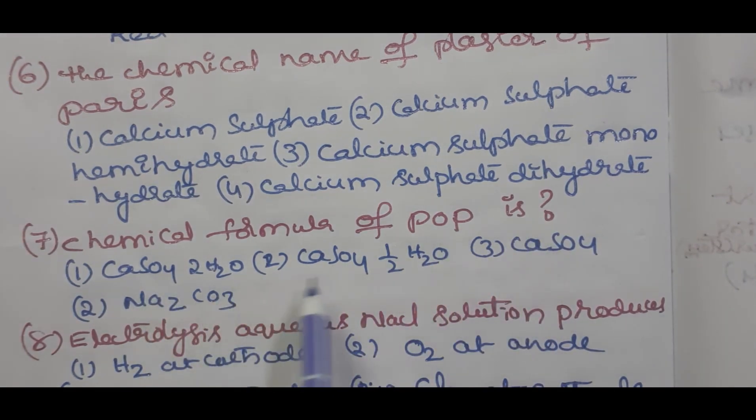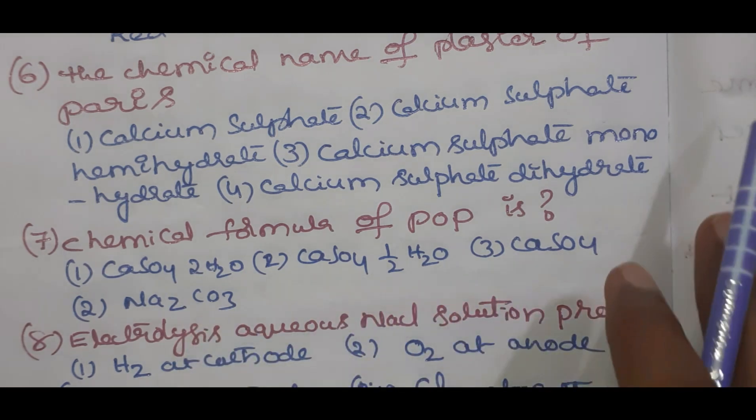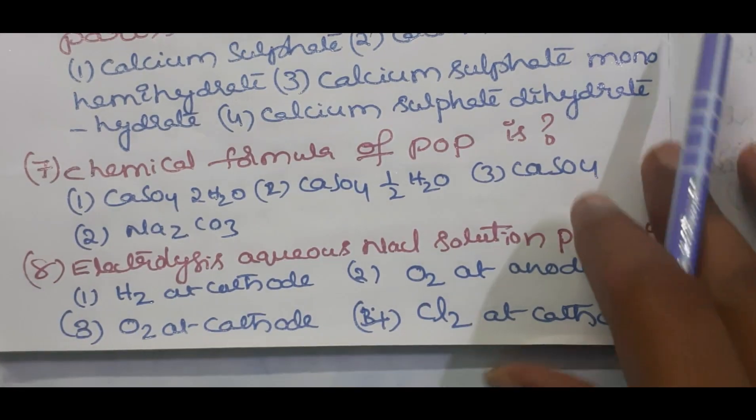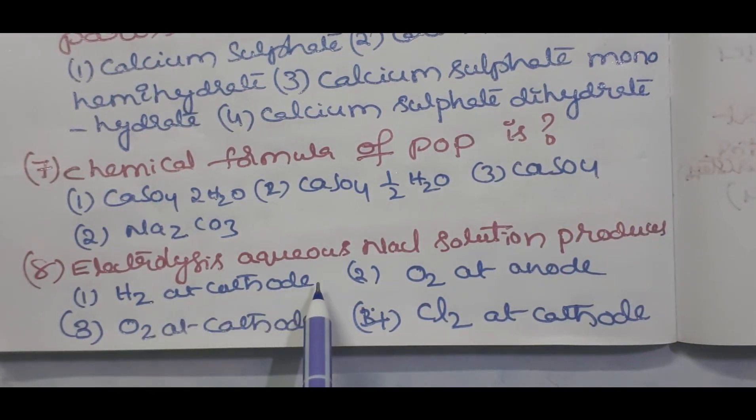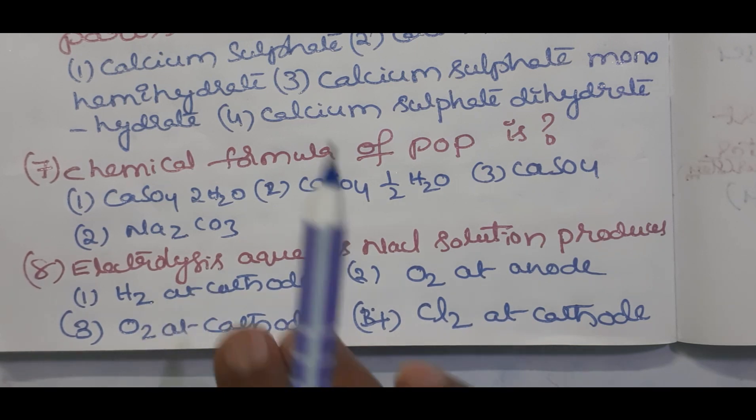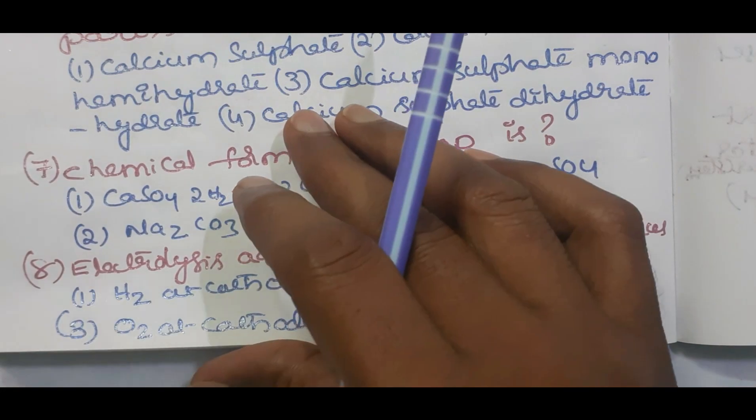Seventh one students: chemical formula of POP is CaSO4·2H2O, CaSO4·½H2O, CaSO4, Na2CO3. Question number eight students: electrolysis of aqueous solution produces H2 at cathode, O2 at anode, O2 at cathode, Cl2 at cathode. Try these answers and send them in comments.